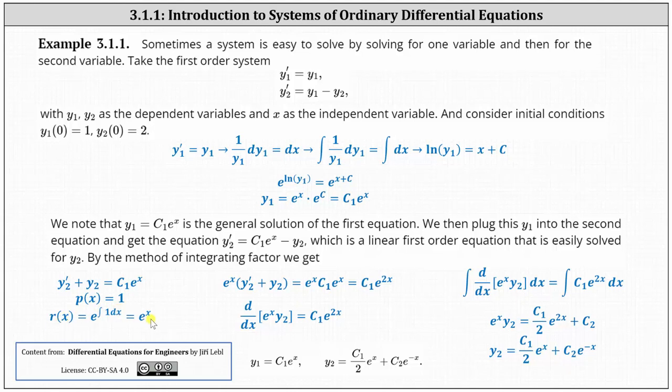Next, we multiply both sides of the equation by e to the x. When doing this, the left side is now equal to the derivative of the integrating factor and the variable y2. Also notice on the right side, e to the x times c1 times e to the x is equal to c1 e to the 2x. The next step is to integrate both sides of the equation, which is shown here on the far right in blue.